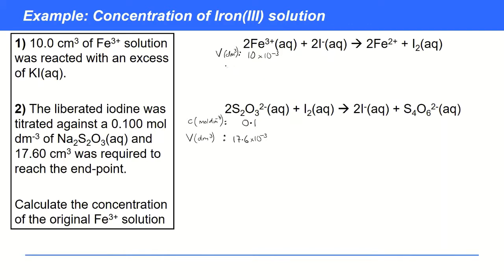I need to work out the concentration in mol dm⁻³ of the Fe³⁺ — that's my target. The second thing to do after writing in all the information is to work out the number of moles of something. I can't do it for Fe³⁺ yet, but I can for sodium thiosulfate because I have both concentration and volume. So I'm going to work that out beneath the equations.